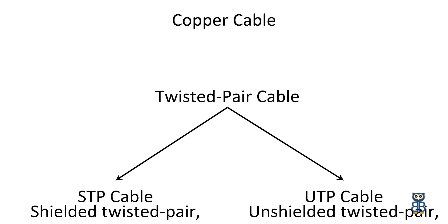The next one is copper cable. The copper cable is divided into two types: unshielded twisted pair and shielded twisted pair. Before we understand the difference between them, let's understand what a twisted pair cable is. In a twisted pair cable, every two wires are twisted around each other to form a pair. Usually, there are four pairs.